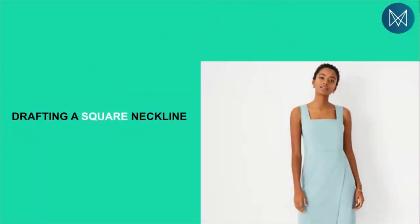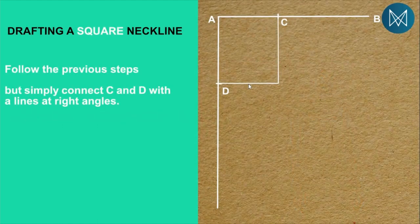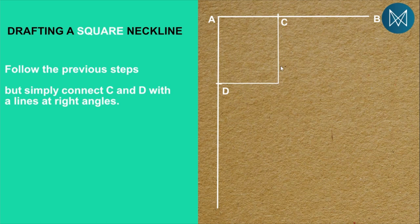Now let us look at how to draft a square neckline. As you can see in that picture, the lady is wearing a dress with a square neckline. In this case it's very simple - you can see the pattern here. You simply follow all the previous steps apart from the step of curving the neckline. In the previous round neckline we connected C and D with a curve, but for the square neckline we simply connect C and D with lines at right angles, and at that point you will have finished drafting your square neckline.